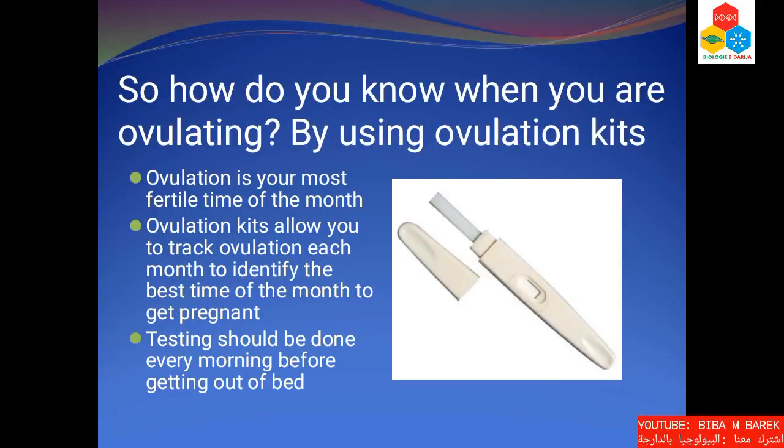So how do you know when you are ovulating? By using ovulation kits. Ovulation is your most fertile time of the month. Ovulation kits allow you to track ovulation each month to identify the best time of the month to get pregnant.